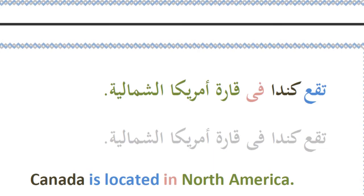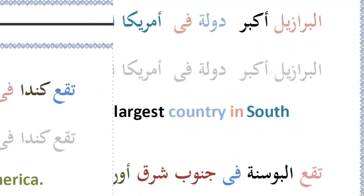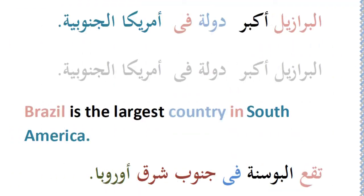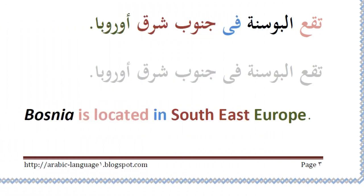Fourth sentence: Taqau Canada fi qarat America al-Shamaliyya — Canada is located in North America. Fifth sentence: Al-Brazil akbar dawla fi America al-Janubiyya — Brazil is the largest country in South America. Last sentence: Taqau al-Busna fi janub sharq Urubba — Bosnia is located in south-east Europe.